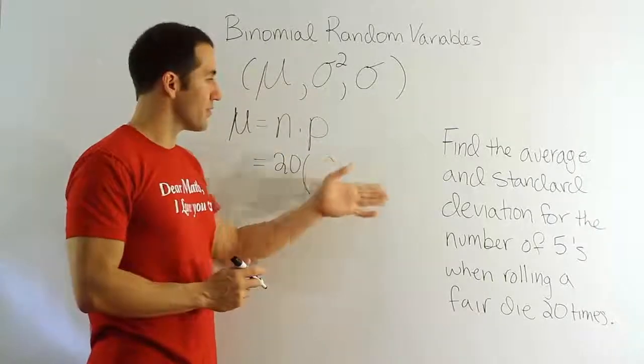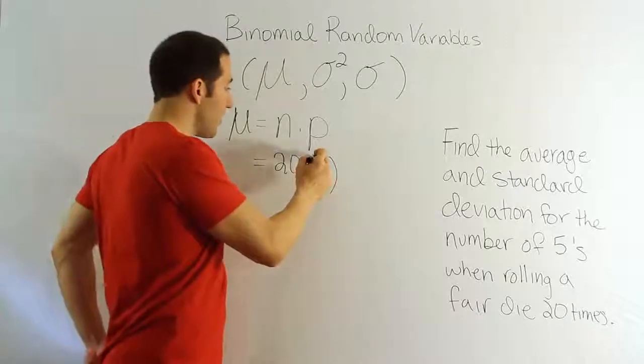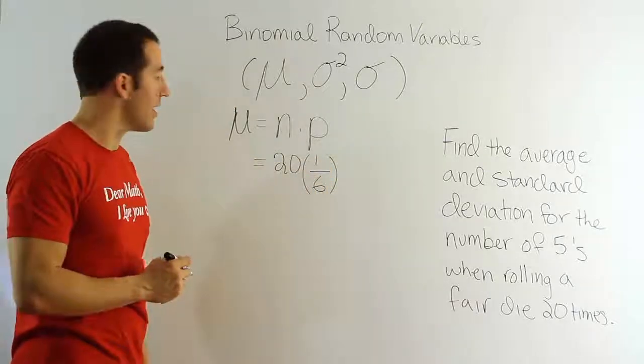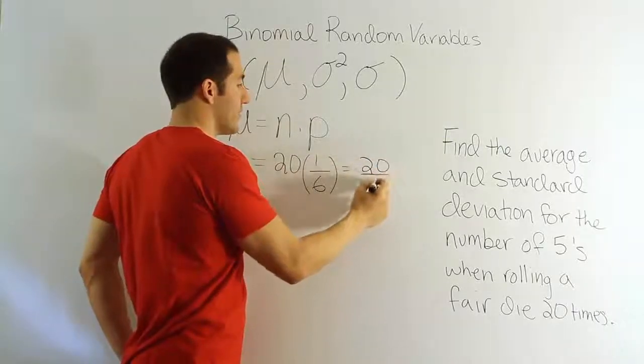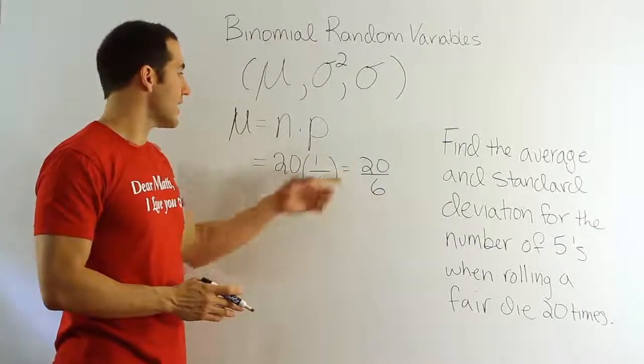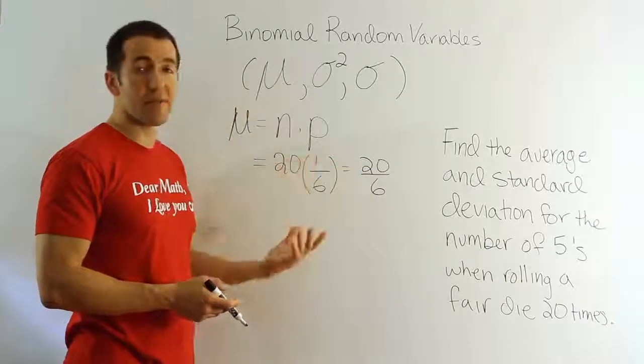The reason why I say it's 1 sixth is because if we're looking for the probability that we roll a 5, then we'll have one 5 on the die over 6 possible numbers on the die. And so the end result here is of course 20 over 6. And then if you want to reduce that, basically we can say that we divide and get a decimal, or we can just reduce the fraction and then divide afterwards.